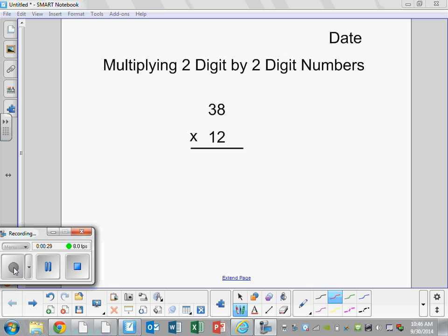In your numbers and operations section of your math notebook, please find the next blank page and put today's date in the top right hand corner and title the notes multiplying two digit by two digit numbers.